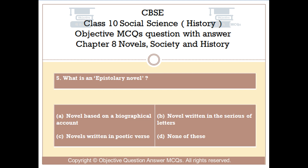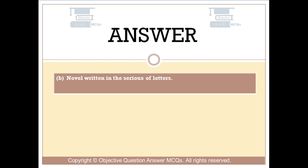Question number 5. What is an epistolary novel? Option A: A novel based on a biographical account. Option B: A novel written in a series of letters. Option C: Novels written in poetic verse. Option D: None of these. The right answer is Option B — a novel written in a series of letters.